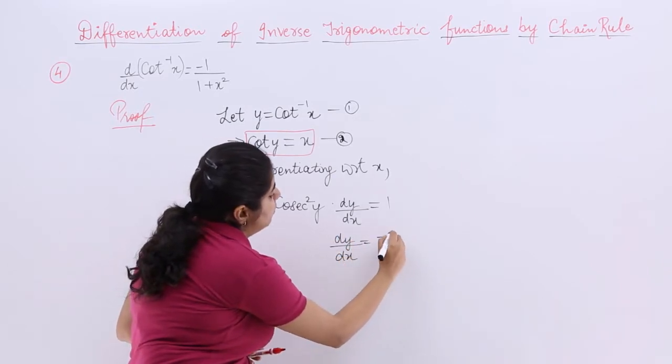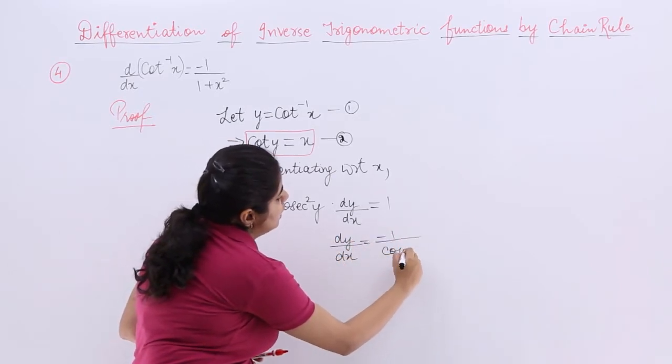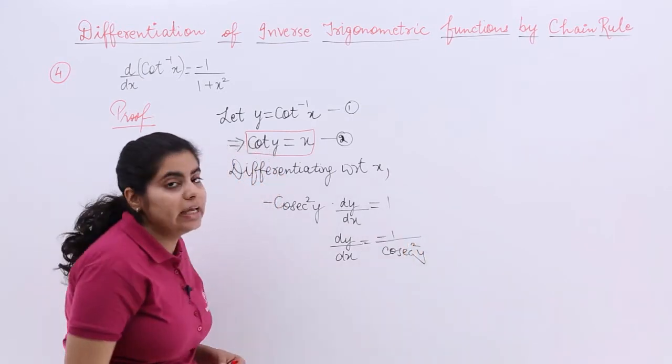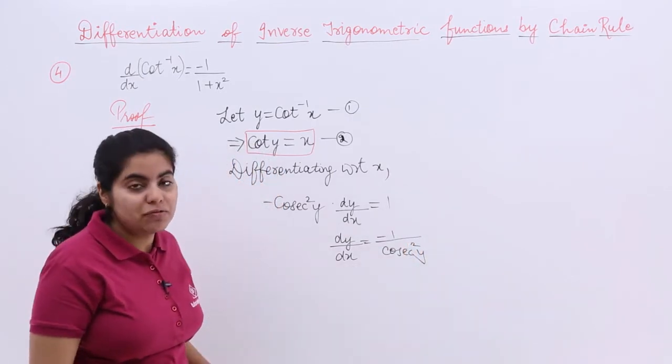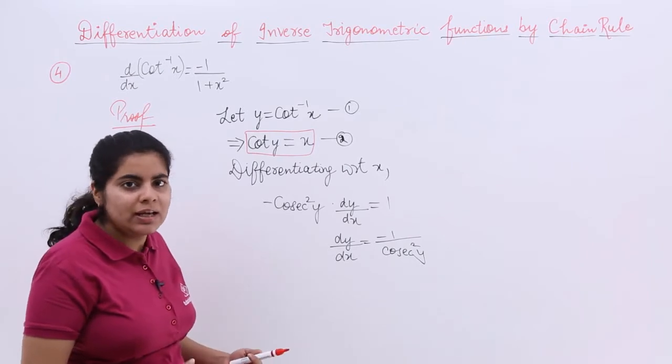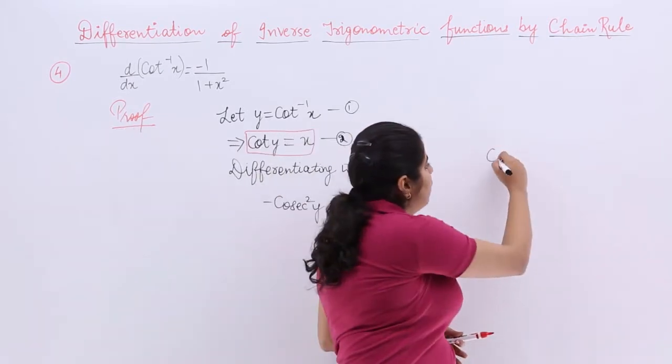So what is dy/dx from here? dy/dx is equal to minus 1 upon cosecant square y. And cosecant square y has some relation with cot square? Yes it has. Let me write the formula.